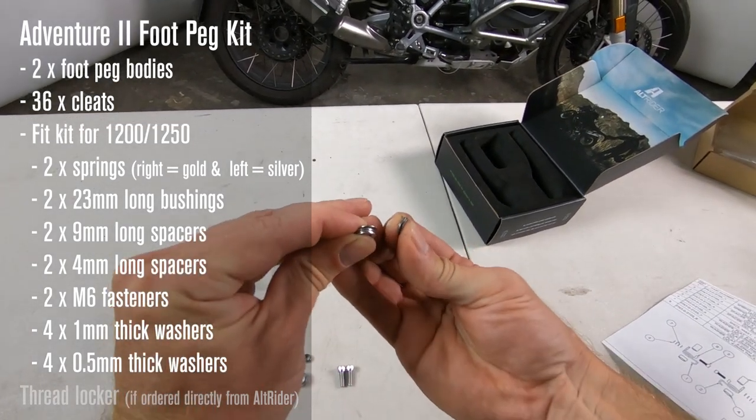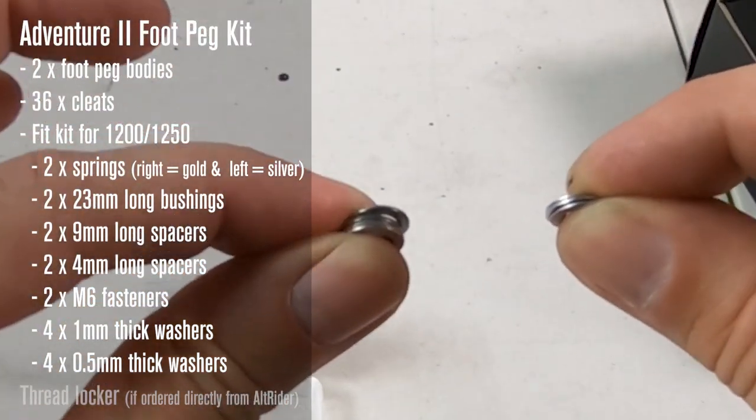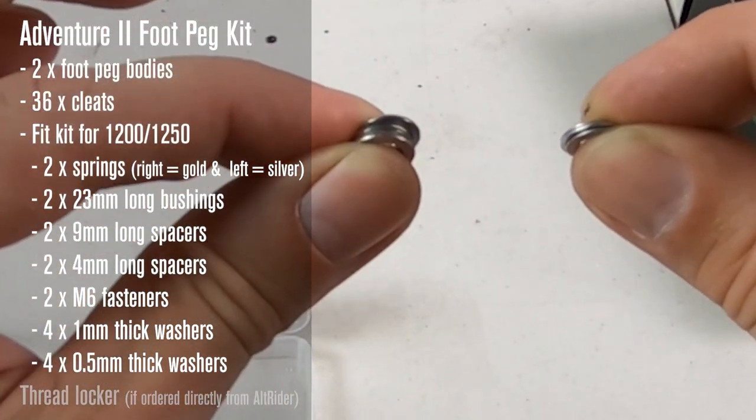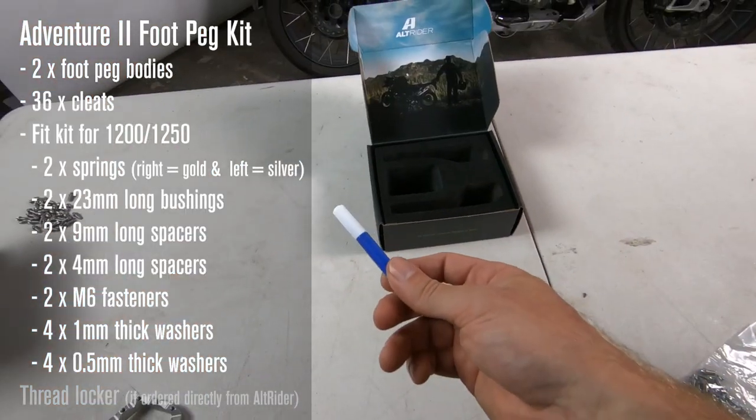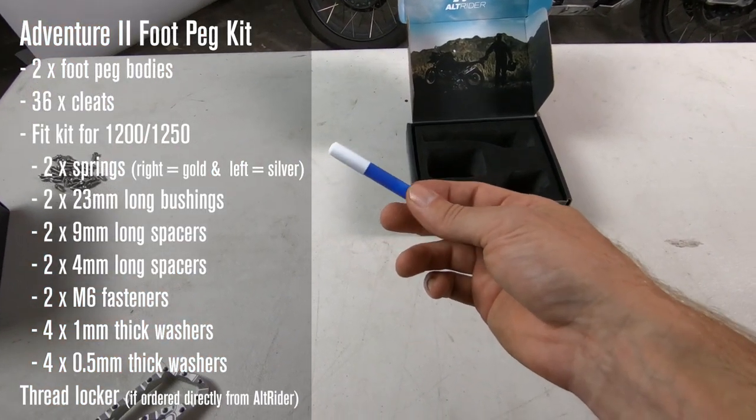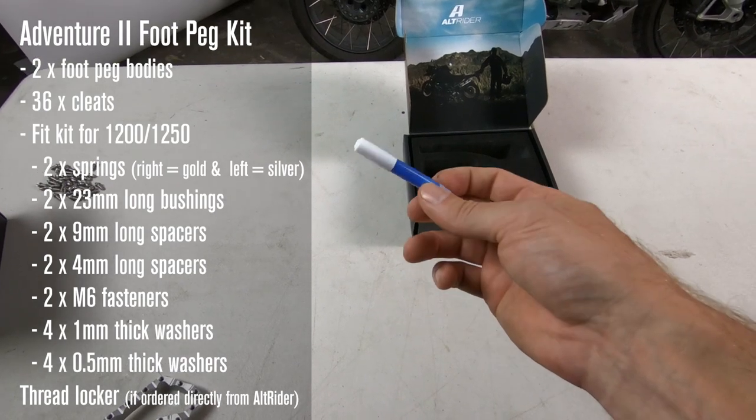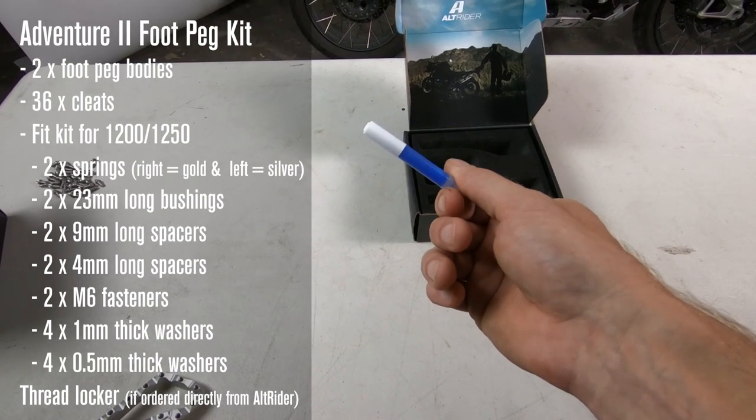You'll see the difference in the washers. I have the 1-millimeter thick washers on the left and the half millimeter thick on the right. And if you order direct from AltRider, you'll receive thread locker. This is a great little item you can carry with you when you go out riding in case it's needed.